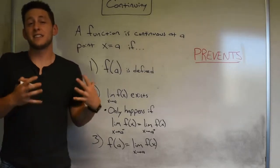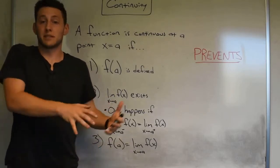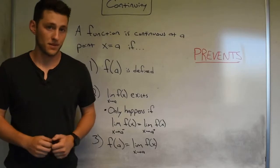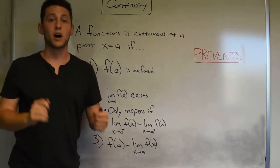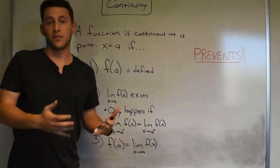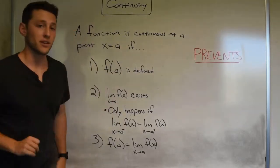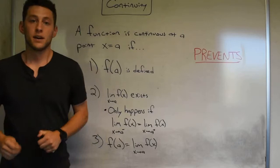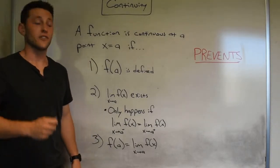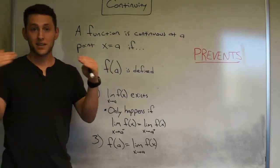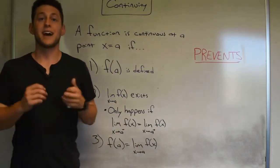Now that we've seen pictures and got the idea of what continuity means on a graphing level, let's talk about how we can formally define it so we can use our limit tools to really see if a function is continuous. A function is continuous at a point x equals a — and remember, with continuity we are always talking about whether a function is continuous at a single point — if these three things hold. One: f of a is defined. Two: the limit as x approaches a of our function exists. And last but not least, three: the function value actually equals the limit of the function as we approach that point a.